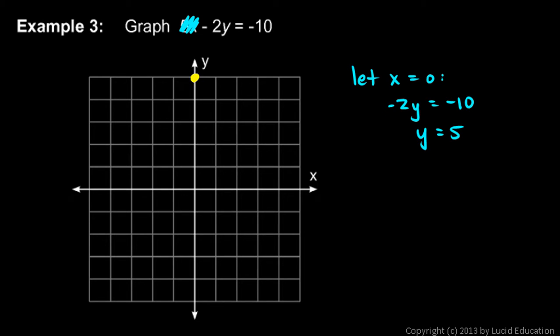Let's plot the point on the y-axis where y is 5. Now let y equals 0. If y equals 0, then we have 5x minus 0 is negative 10. That's just the same as saying 5x equals negative 10, so x has to be negative 2. That's the x-intercept. So we found the y-intercept and the x-intercept. Now we can draw in the line.